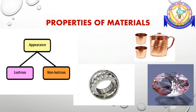Objects around us are made of different materials. At times an object is made of a single material, or it could be made of many materials. One material could also be used for making many different objects. So what decides which material should be used? We choose a material to make an object depending on its properties and the purpose for which the object is to be used.